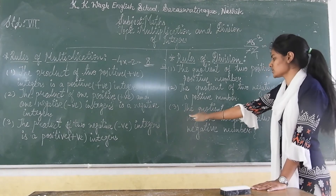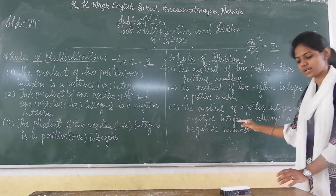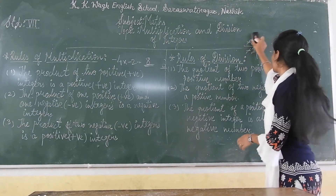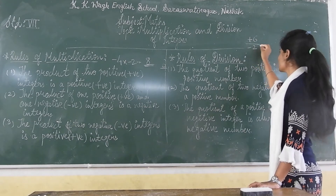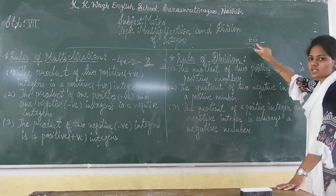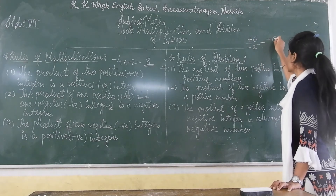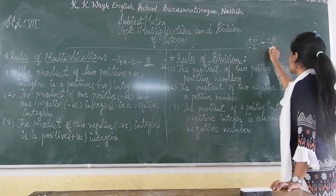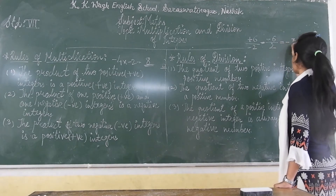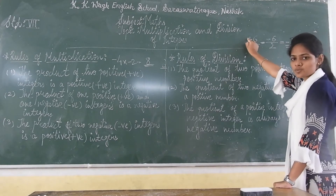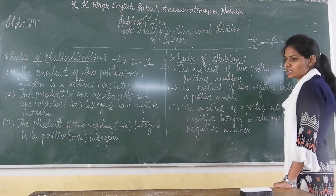The third rule is: the quotient of a positive integer and a negative integer is always a negative integer. For example, if we have plus 6 divided by minus 2, the denominator has a minus sign, so we shift it to the numerator and write it as minus 6 upon 2. So our answer will be minus 3. If one number is positive and another is negative, our answer will come in negative.